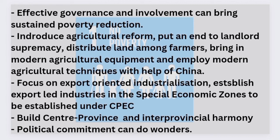We have seen that whenever program implementation is discussed, there is often a clash between the center and provinces, which ultimately leads to programs being abandoned. We need to build consensus, and for that we already have a platform provided by the constitution — the Council of Common Interest — where provinces and the center can discuss problems, negotiate, and reach proper conclusions. For the nation's sake, we need to use this platform, because our poverty ratio has grown alarmingly and we are still far from achieving our Sustainable Development Goals.